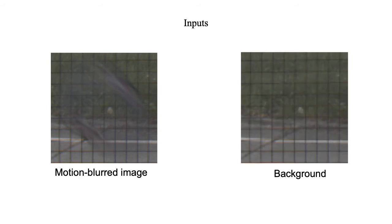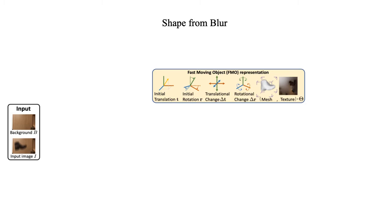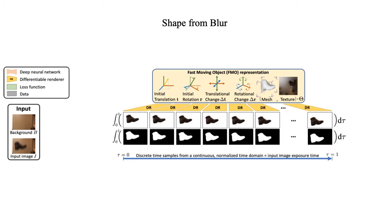The inputs are the motion-blurred image and the background. We propose the Shape from Blur method. The object is represented as a textured 3D mesh with location and motion parameters. We apply differentiable rendering to estimate subframes of sharp object projections. The subframes are averaged to model the motion blur.